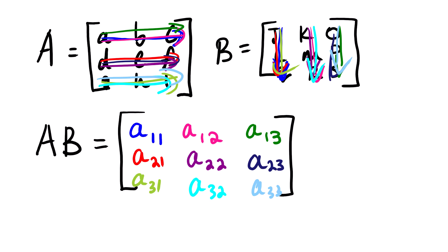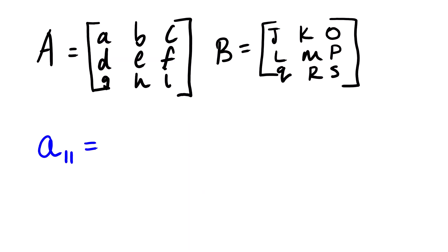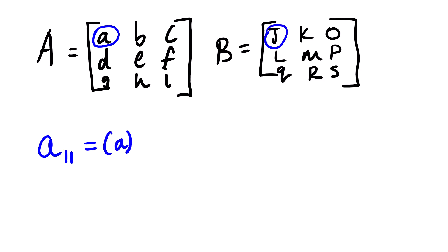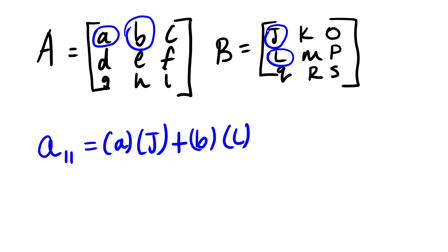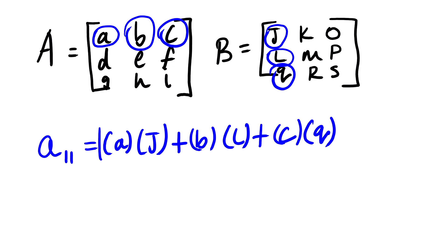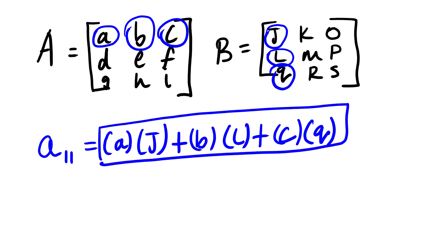Let us go into detail on how to multiply these matrices. The first element of our new matrix uses this row and this column. We take this element multiplied by this, so it's A multiplied by J, plus B multiplied by L, plus C multiplied by Q. This whole term equals the first element, A11.